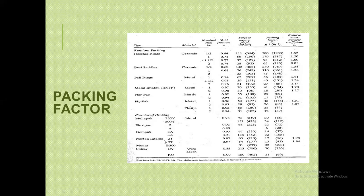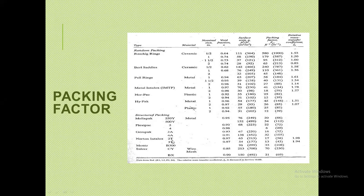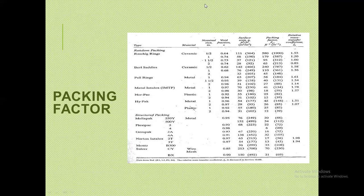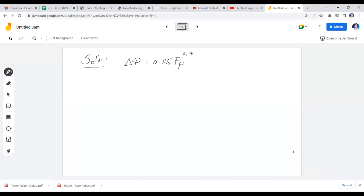The structured packing flooding correlation diagram looks similar to the random packing one, but differs in the graduation and scaling. The ΔP of 0.033 falls between the 0.025 and 0.05 lines. The units for the pressure drop are inches of water per foot of packing material. We also need to determine the flow parameter for the x-axis of the diagram.